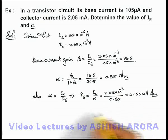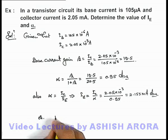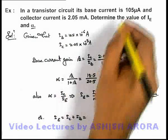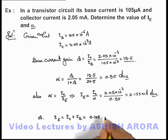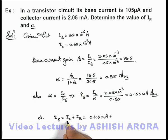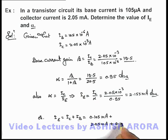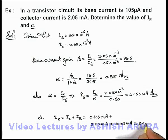The same result can be calculated in a different way, as we know Ie can be written as the sum of collector current and base current. Substituting the values: collector current is two point zero five milli ampere, and base current in milli ampere is zero point one zero five milli ampere. Adding these two gives two point one five five milli ampere, confirming the answer.